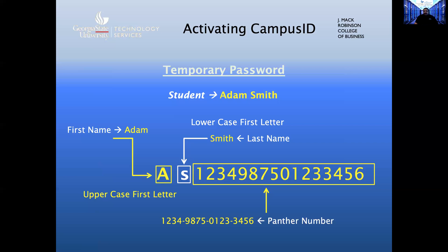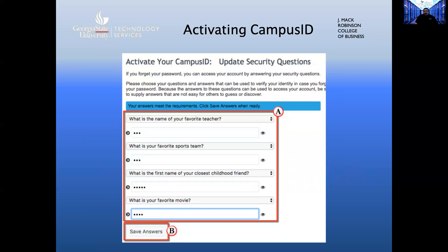To find your Panther number, look on your Panther ID card behind 'Panther #'. Once you have properly typed in your temporary password, you are asked to update your security questions. There are four questions you will be able to select and provide answers to. Make sure that you remember the answers, as they will be needed if you have locked out your account or are unable to resolve a password reset using the online method. Then click Save Answers as shown by box B.